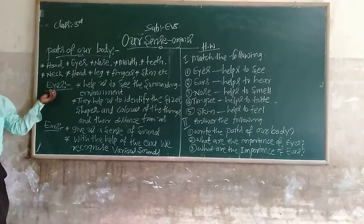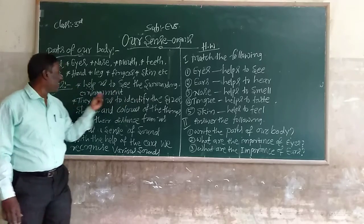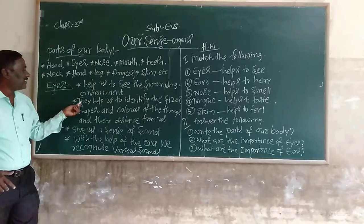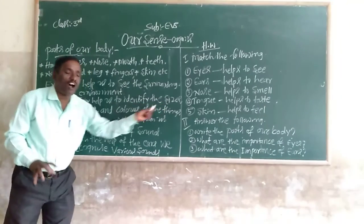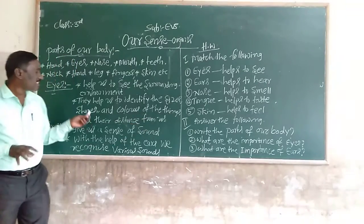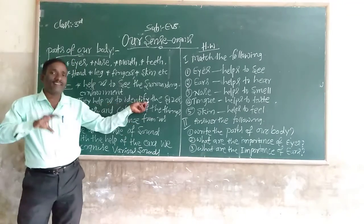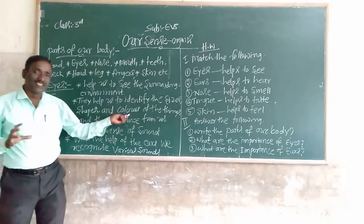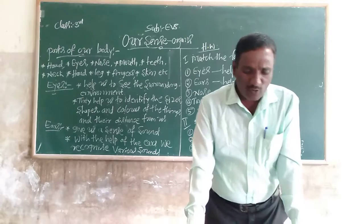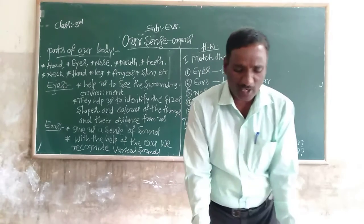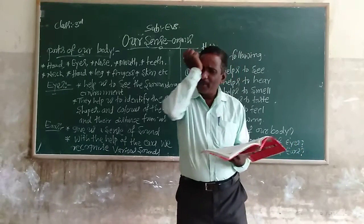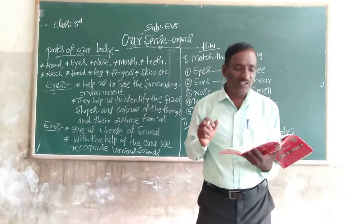What is the importance of eyes? Eyes help us to see the surrounding environment. Eyes help us to identify the sizes, shapes, and colors of things and their distance from us. When Manju was coming to school, some dust fell into his eyes. He rubbed them and his eyes became red and started shedding tears.